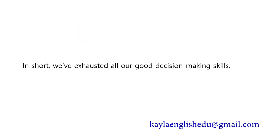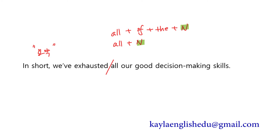In short, we've exhausted all our good decision making skills. in short는 '짧게 말하면, 다시 말해서, 요약해서'라는 뜻으로 전체 글의 결론이 나오는 거예요. all+명사를 쓰거나, all+of+the+명사를 쓰는데, 명사 앞에 정관사 the가 있으면 of를 함께 써요. all은 of를 생략하고 all the 명사로 쓰는 것도 맞아요.